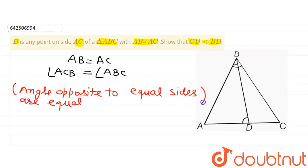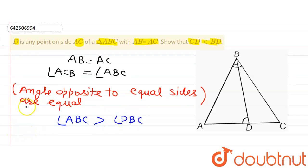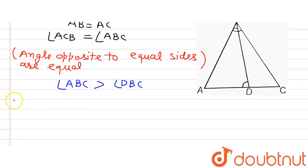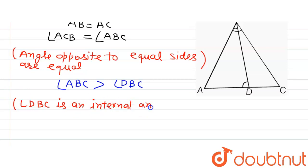Therefore angle ACB will be equal to angle ABC. Now if we observe angle ABC, there is another angle DBC. Since angle DBC is a part of angle ABC, we can write that angle ABC will be greater than angle DBC, because angle DBC is an internal angle of angle ABC. Therefore angle DBC will be smaller than angle ABC, or angle ABC will be greater than angle DBC.